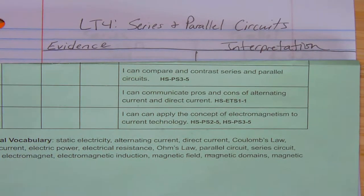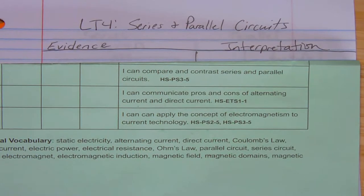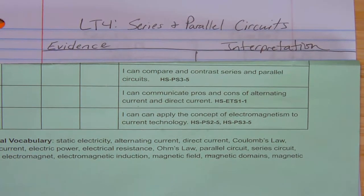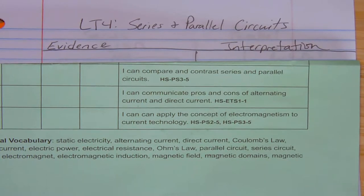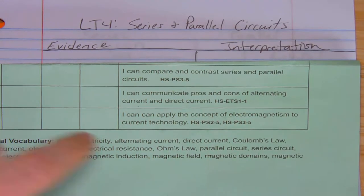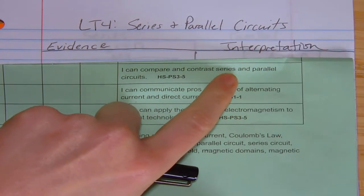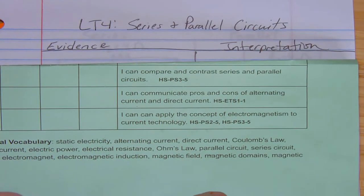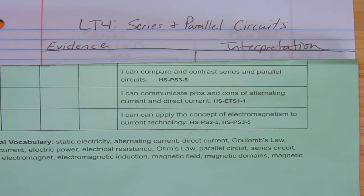These are the notes for LT4 in the Electromagnetism Unit. The purpose of this target is to compare and contrast series and parallel circuits. Remember LT3 was Ohm's law, the VIR triangle. The way we use that VIR triangle now will differ a little bit for these series and parallel circuits. So we need to know the difference between the two and then how we would calculate current based on what type of circuit it is.